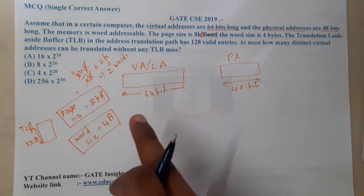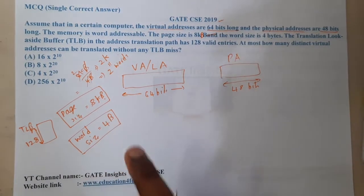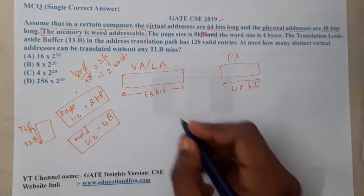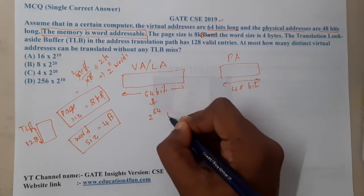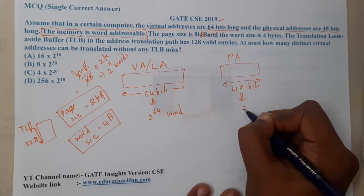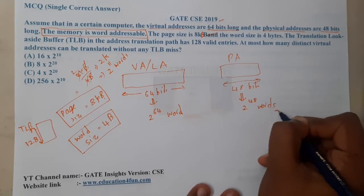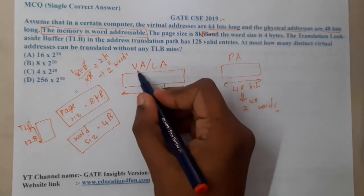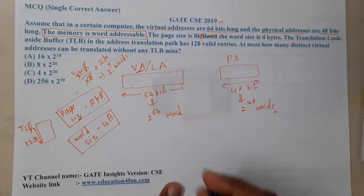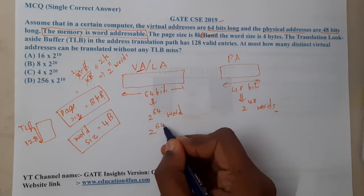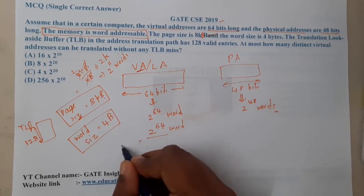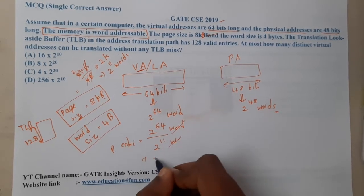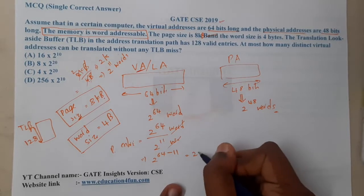Since memory is word addressable, virtual memory size is 2^64 words and physical memory size is 2^48 words. The number of pages in virtual memory is 2^64 divided by 2^11, which equals 2^53 pages.